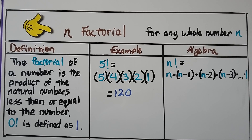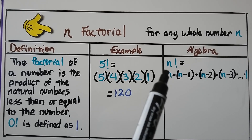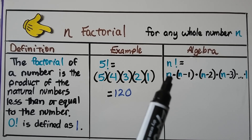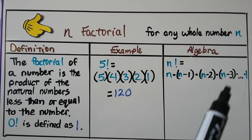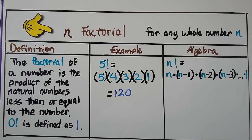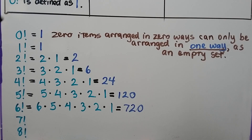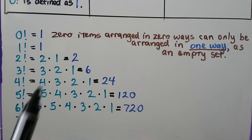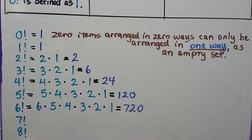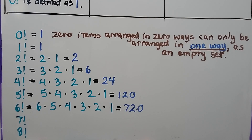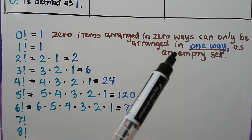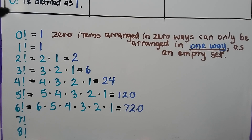In algebra, n factorial would be n times n minus one times n minus two times n minus three, until we got to one. Zero factorial is equal to one, because zero items can only be arranged in one way — as an empty set. If you think of it that way, it'll make sense. There's only one way to arrange zero things, and that's as an empty set. So it equals one.